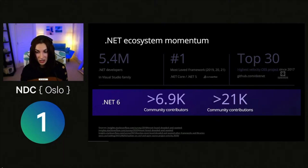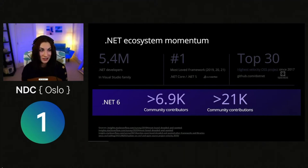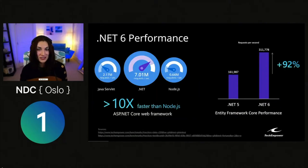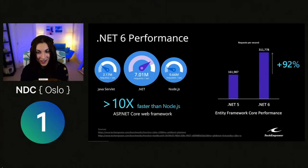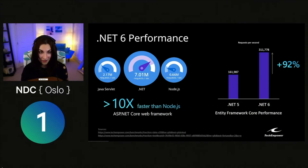If you're one of those contributors, thank you very much for helping us build these platforms together. On performance: .NET 6 continues to focus on best performance. You can see the TechEmpower performance comparison with Java and Node.js. ASP.NET Core is still over 10 times faster than Node.js. Entity Framework Core performance on .NET 6 improved 92% over .NET 5 — that gain comes simply from moving from .NET 5 to .NET 6. Query performance is also 36% better than .NET 5.